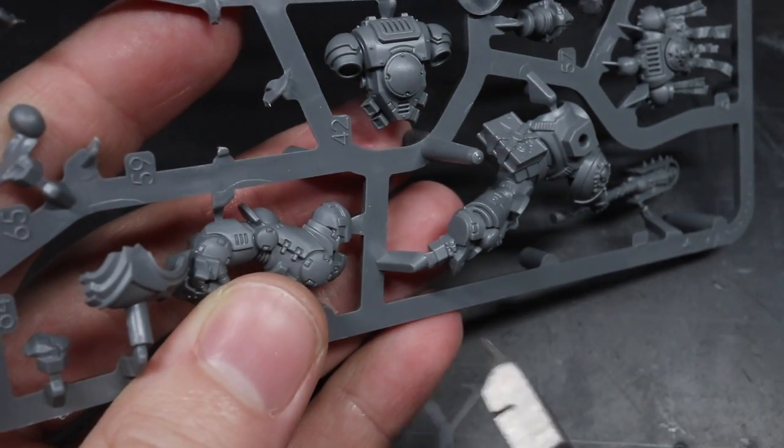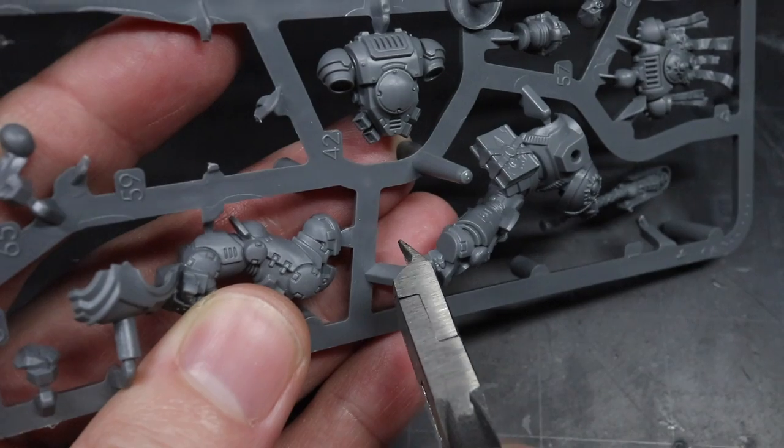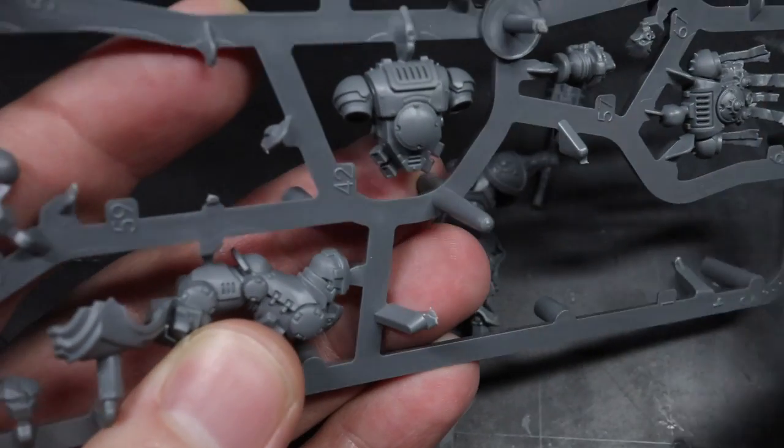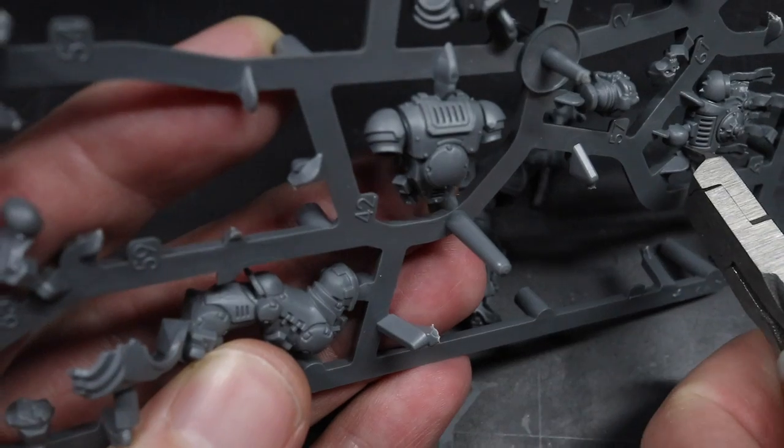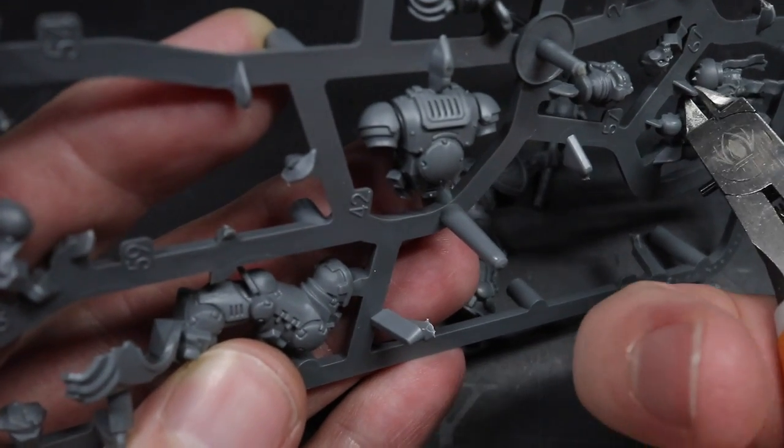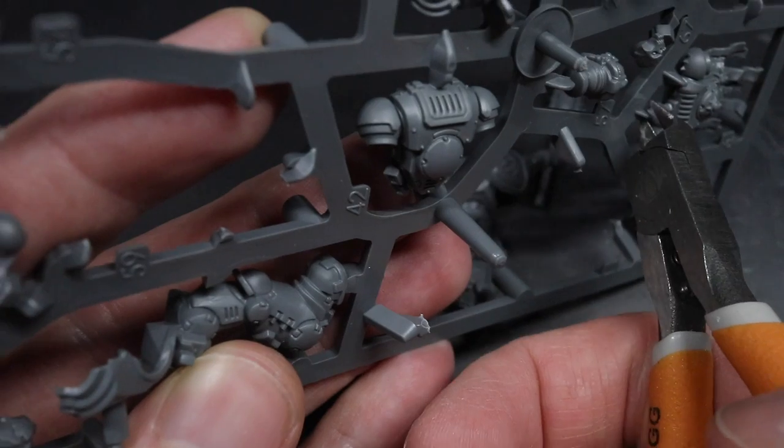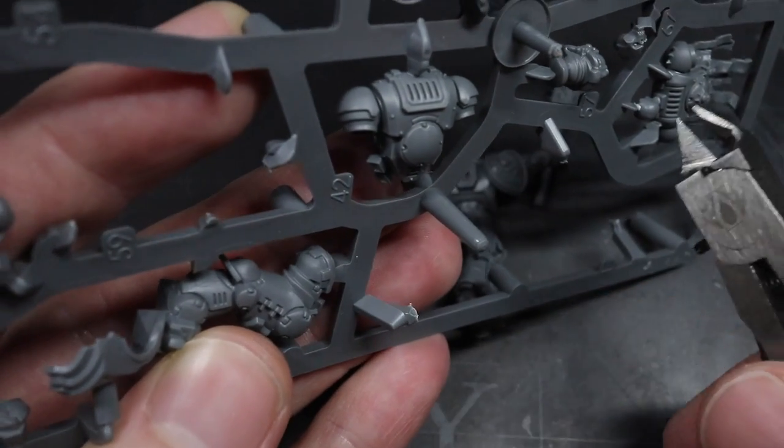Welcome back to another Homebrew Space Marine chapter conversion video. Another one of my viewers got in touch with me with a commission for a chapter master for their own homebrew chapter and I thought it would make for an interesting conversion guide. I'm Pete the Wargamer and in this video I'll be showing you how to build a chapter master of the Death Knell.